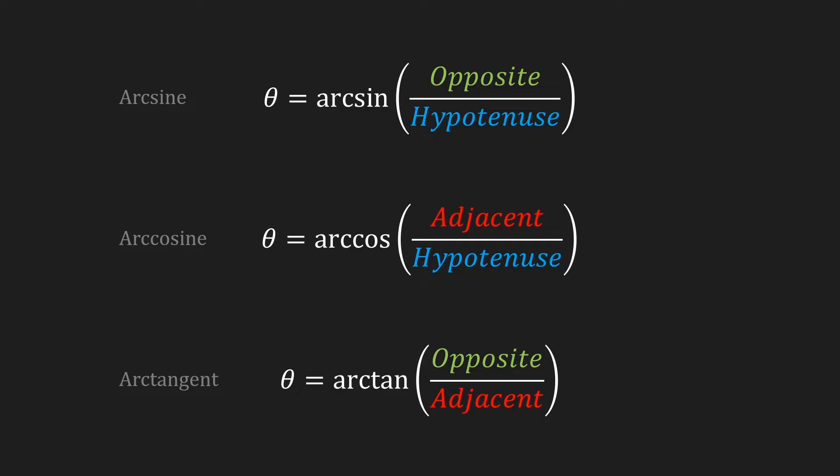You might recognize that opposite over hypotenuse, adjacent over hypotenuse, and opposite over adjacent are the exact same formulas which we use to calculate the sine, cosine, and tangent. So we could say that the arcsine of the sine of an angle is the angle itself, and the same goes for the cosine and tangent.